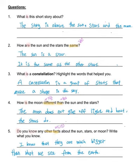Second question. How are the sun and the stars the same? The sun is a star and it is the same as the other stars. So the sun is a star, the moon is a star, and the other stars are just stars. So all of them are stars and that's the same thing.